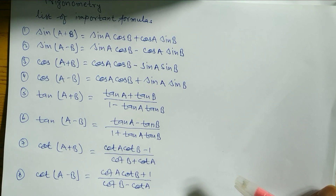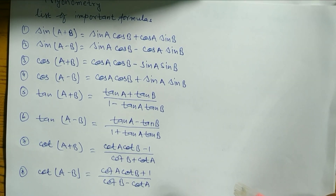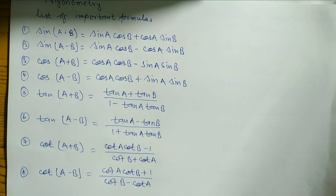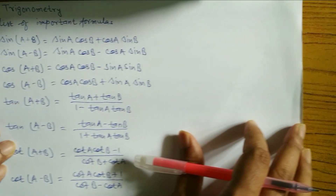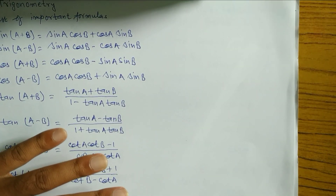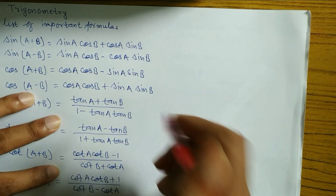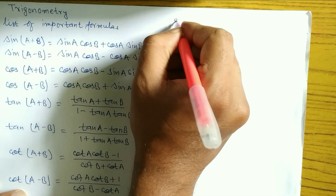If you know these formulas, it's enough for A+B and A−B. Now I'm going to provide you formulas of trigonometric ratios of multiple angles — meaning sin 2A, cos 2A, and so on. So keep watching till the end. If you are new, please subscribe and like this video. Next, formula number 9.